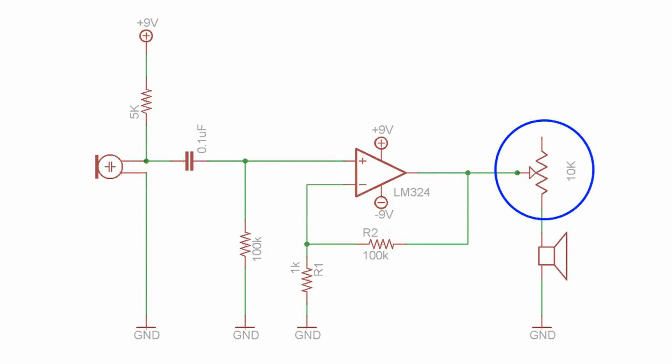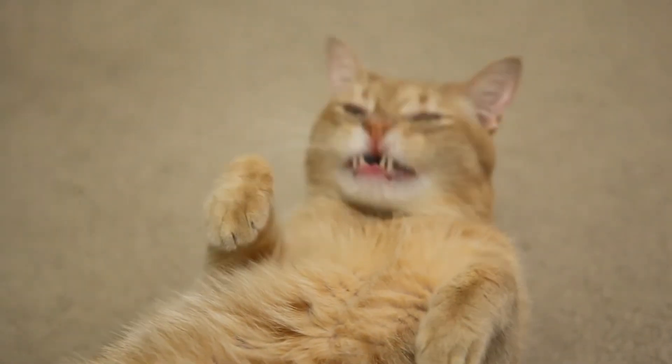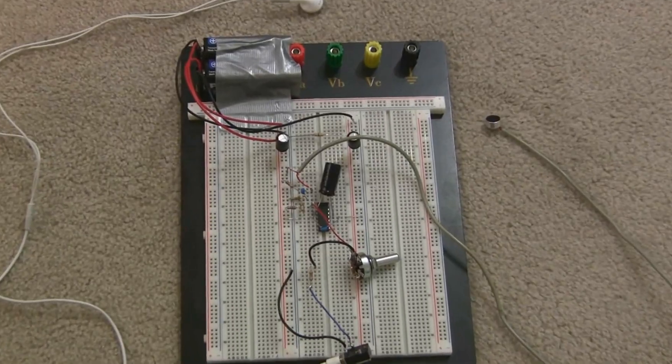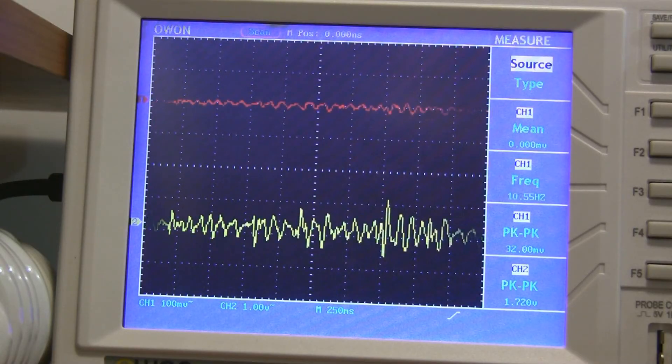Finally, I added a variable resistor to the output to give me some control over the volume. Hey, wake up, we're almost done. Alright, here's what it looks like built on a breadboard, and guess what, it works. If you turn up your subwoofer, you'll be able to hear my heartbeat.